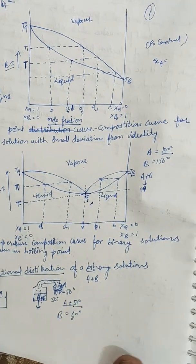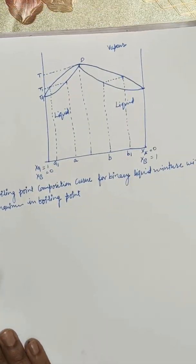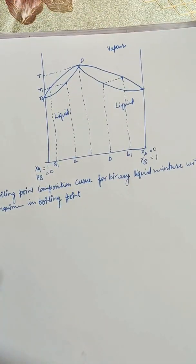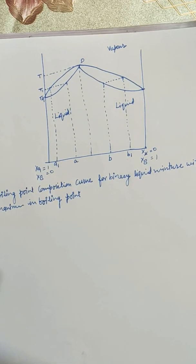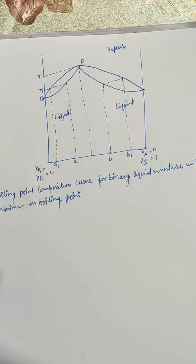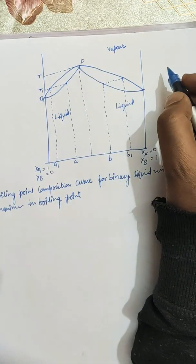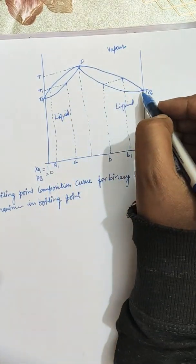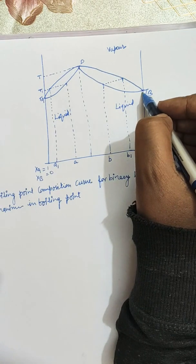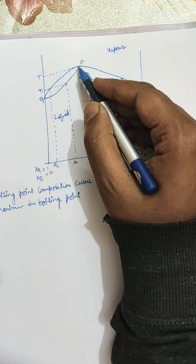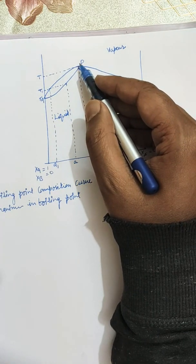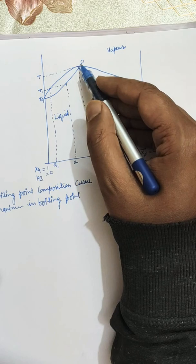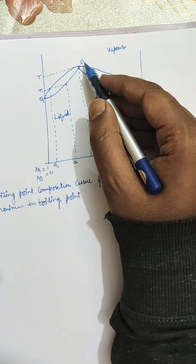The third type of graph covers solutions showing a maximum in the boiling point. Maxima means the boiling points of the pure components TA and TB are lower compared to the boiling point of their mixture. Point D represents the maxima in the boiling point curve.